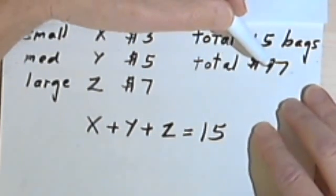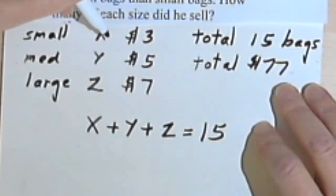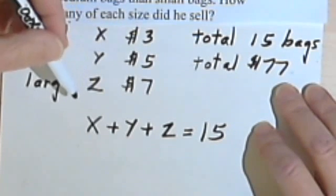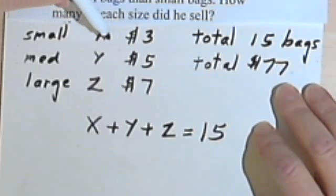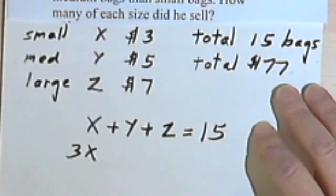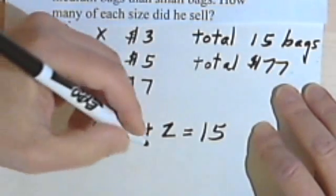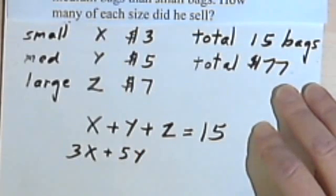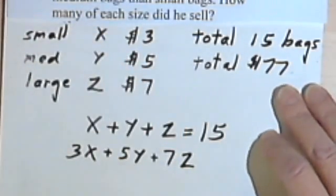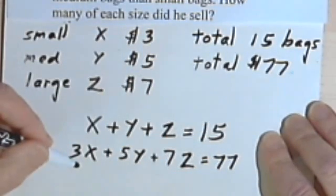Now in the same way, I've got this total of $77. That means that $77 is the total of the amount of money that was made from selling small bags plus the amount that was made from selling medium bags and the amount that was made from selling the large bags. Well, if he sold x of the small bags at $3 each, then he made 3 times x for the small bags. And he sold y of the medium bags and they were $5, so he made 5y dollars for the medium bags. And in the same way, he made 7z dollars for the large bags and that equals 77. Notice you don't have to put in the dollar signs.